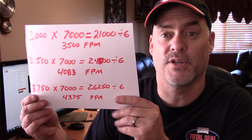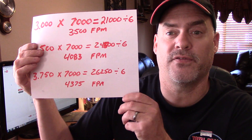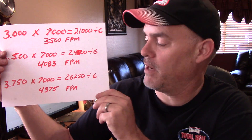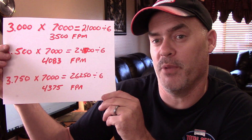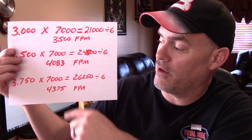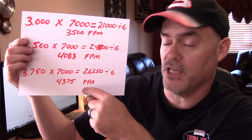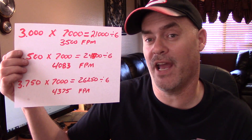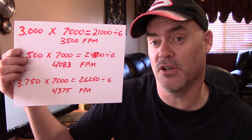Now let's look at our stroker motor, which has a 3.750-inch stroke: 3.750 times 7,000 equals 26,250, divided by 6 gives a piston speed of 4,375 feet per minute. So we have three different engines all turning 7,000 RPMs, but because of the longer stroke, the piston has further to travel, so it has to go faster to make 7,000 RPMs.